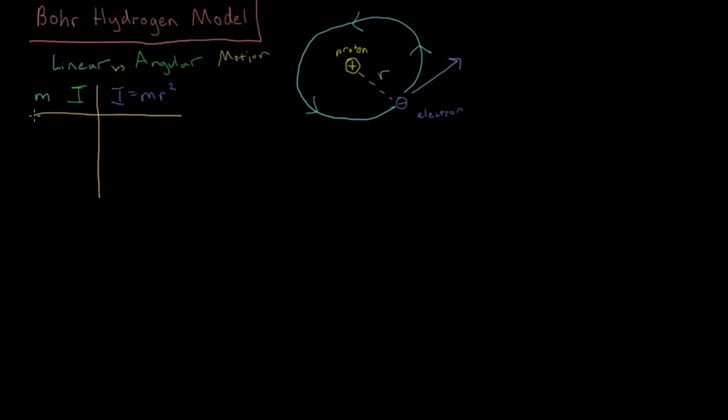Then next up we have velocities. So we have in linear motion the velocity just V, the direction and magnitude that the particle is moving. And in angular motion we have the angular velocity omega. So what relates these is you have linear velocity equals 2π times the radius times the angular frequency ν.